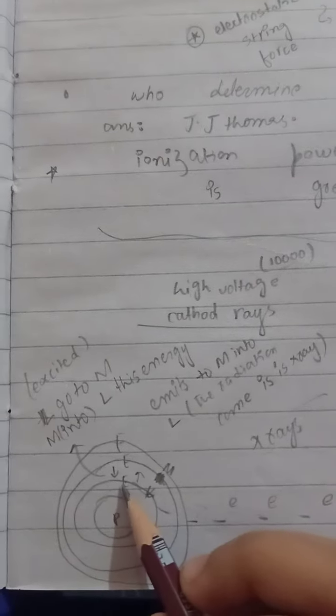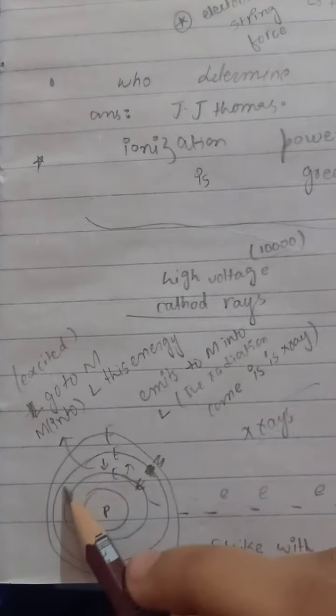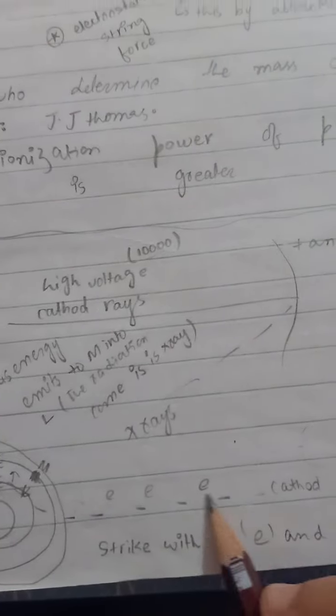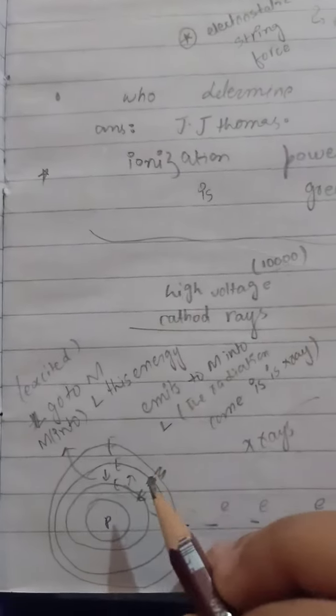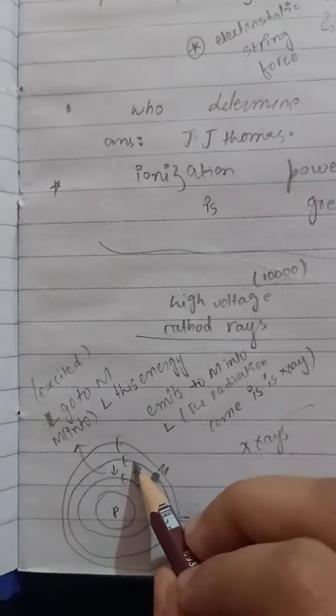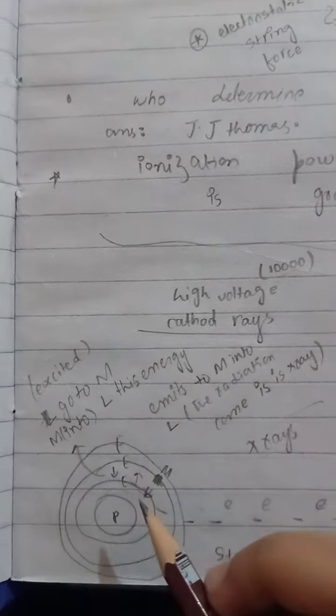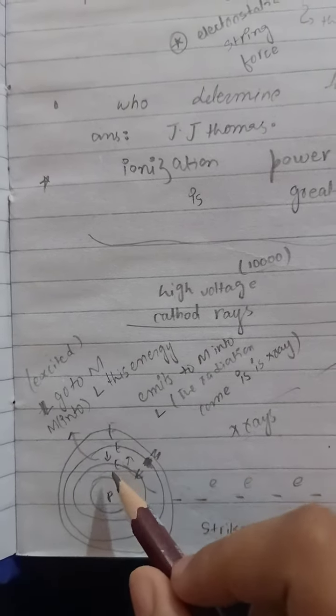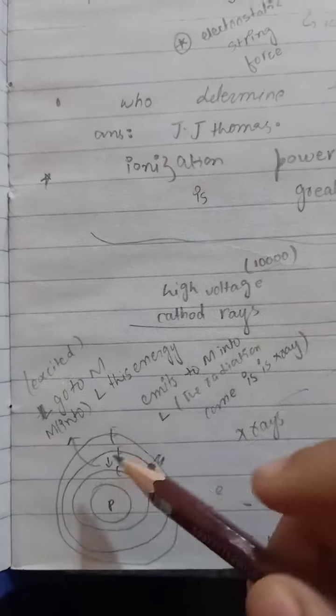These electrons go to the K shell. A high potential electron will be inserted here, and this will be moving from K shell into the L shell. It will be moving to the upper side, and the downward electron will be coming back. The radiation comes from the upward electron.